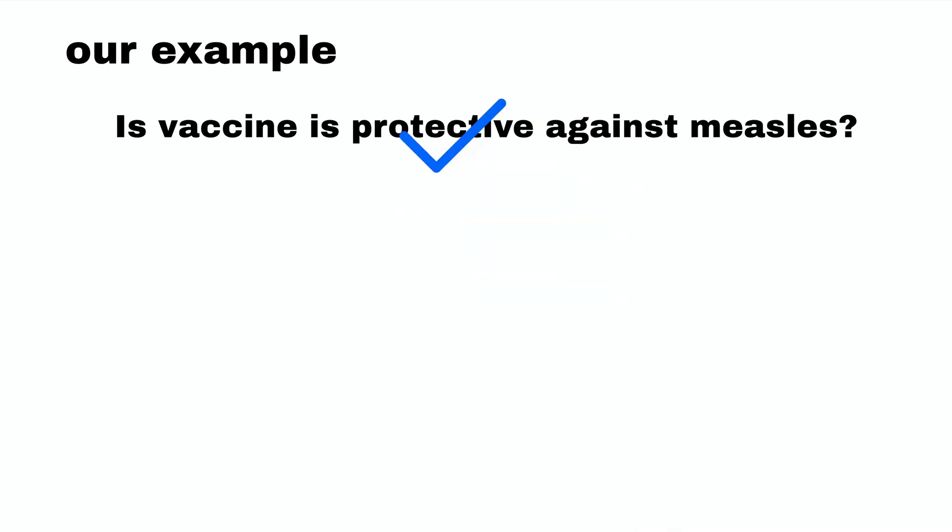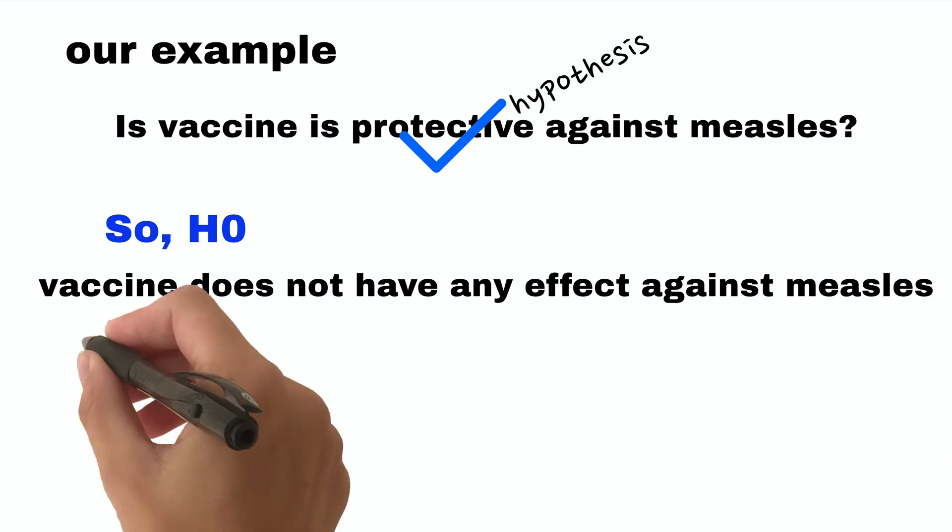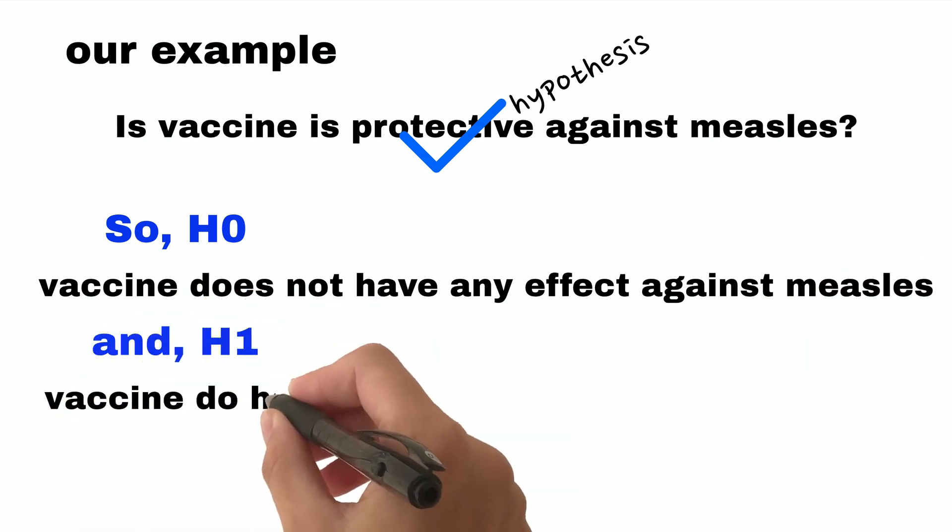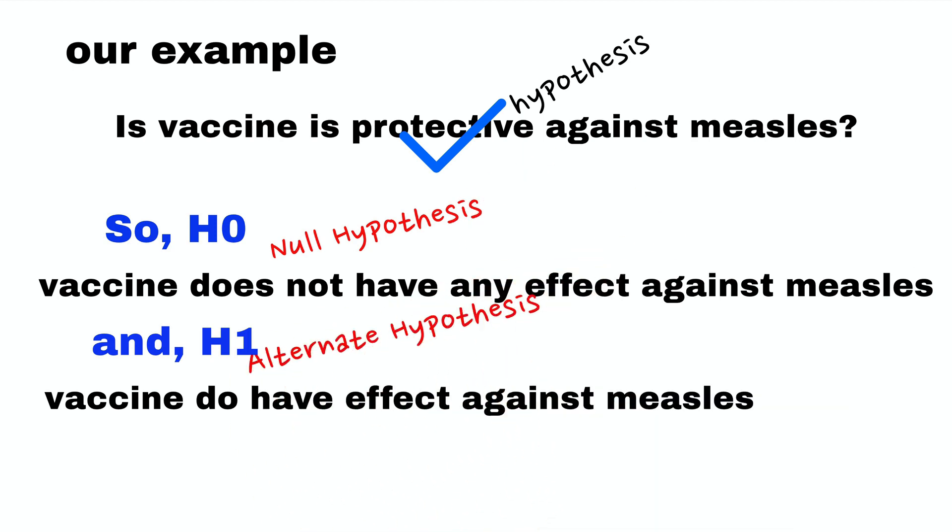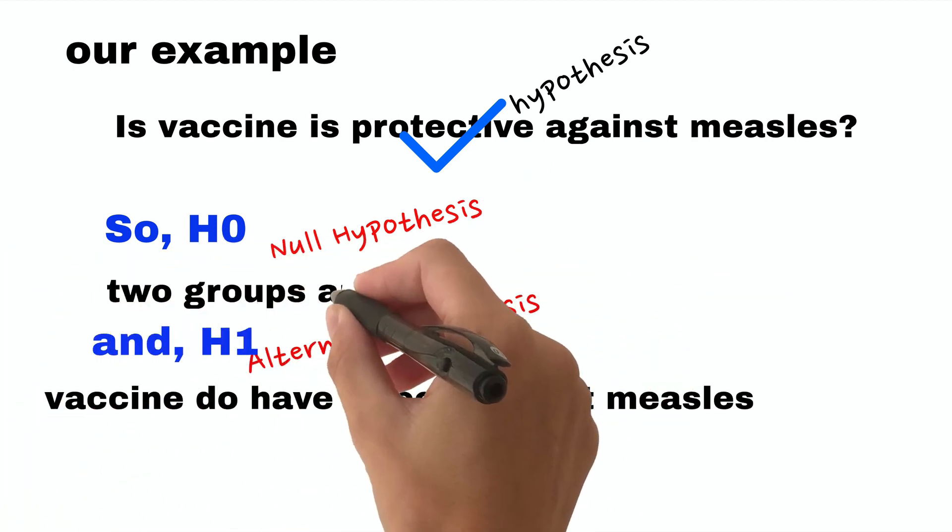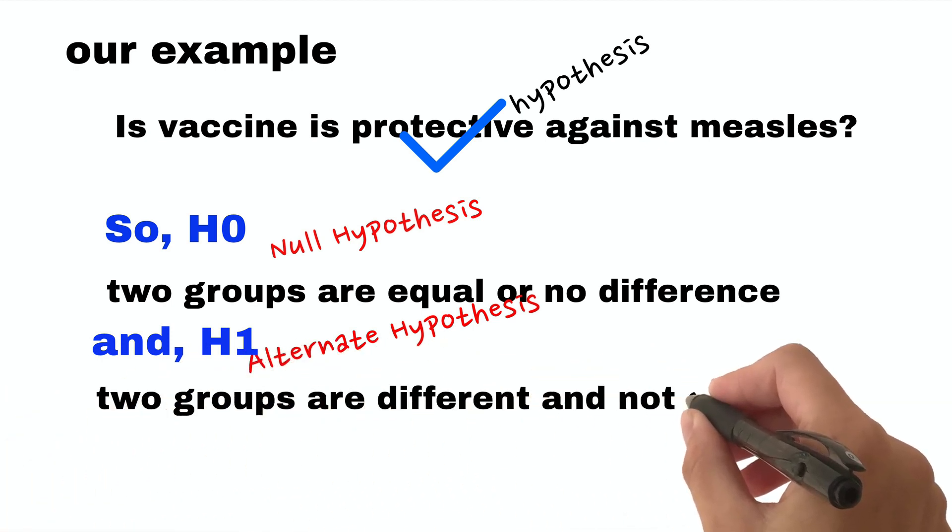So vaccine does not have any effect against measles is the null hypothesis, and vaccine does have effect against measles is the alternate hypothesis. Or we can write two groups are equal or no difference, and two groups are different and not equal.